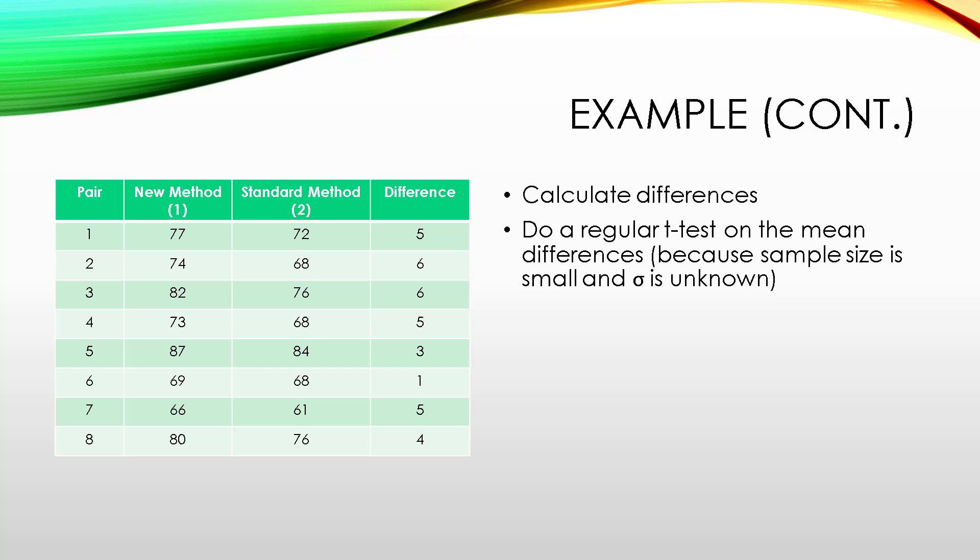From this, we're going to use the sample size of 8, 8 differences, the 5, 6, 6, 5, 3, 1, 5, 4. And just do a regular t-test. We're doing a t-test because the sample size is small and sigma is unknown. We don't know the population standard deviation of these differences. We are going to need to assume that the population of these differences is normal, as we typically have to assume with small samples, because the central limit theorem doesn't apply.